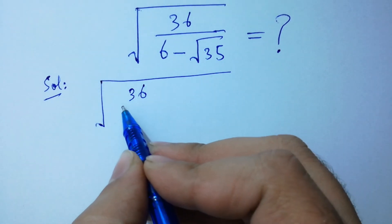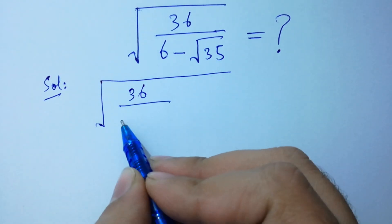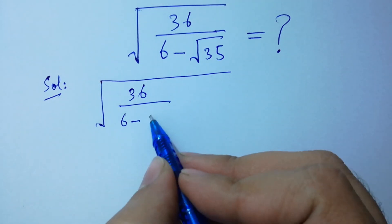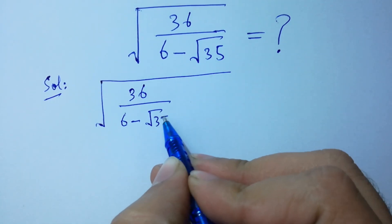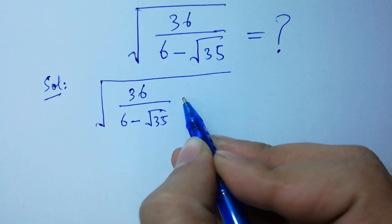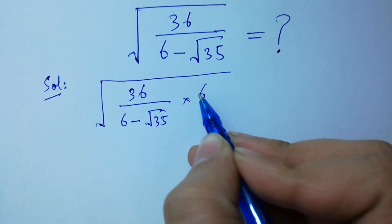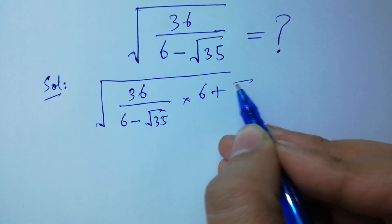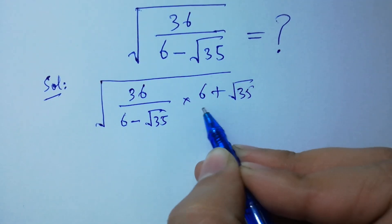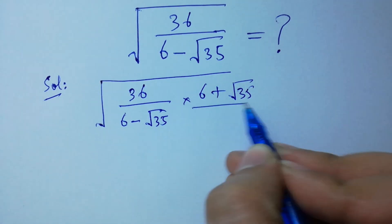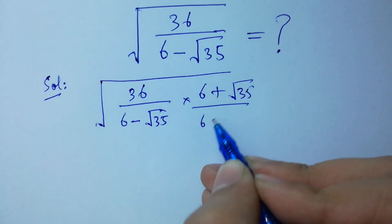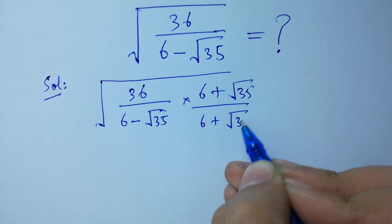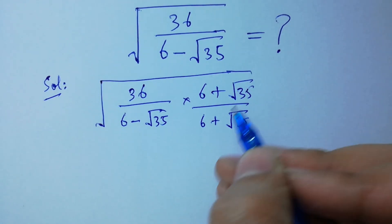We write 36 over 6 minus square root of 35, multiplied by 6 plus square root of 35 over 6 plus square root of 35.